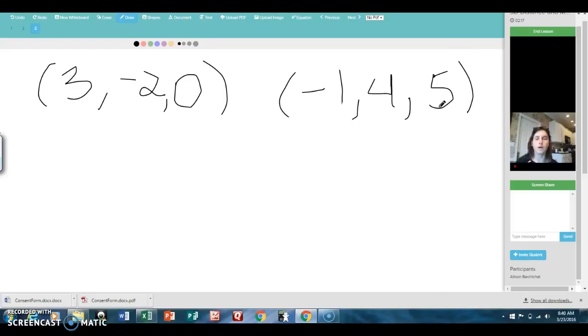There we go. Okay. To figure out the midpoint, all we do is we average the x values like this. We add them up, divide by 2. It's addition up there. We average the y values.